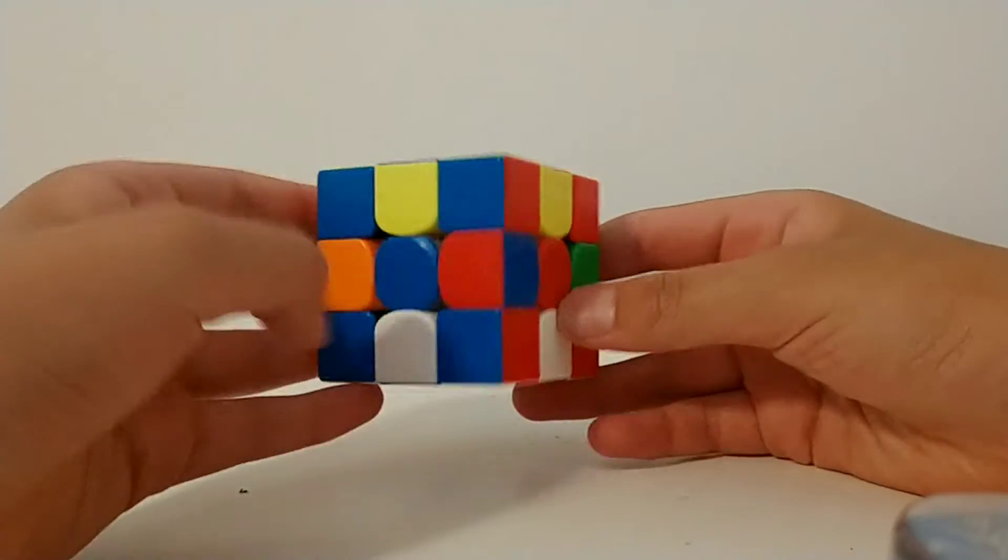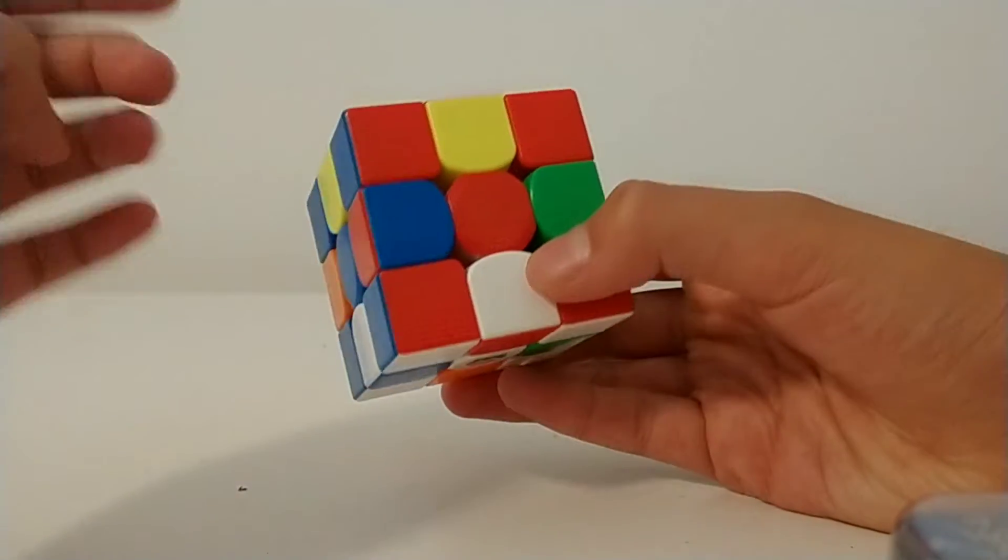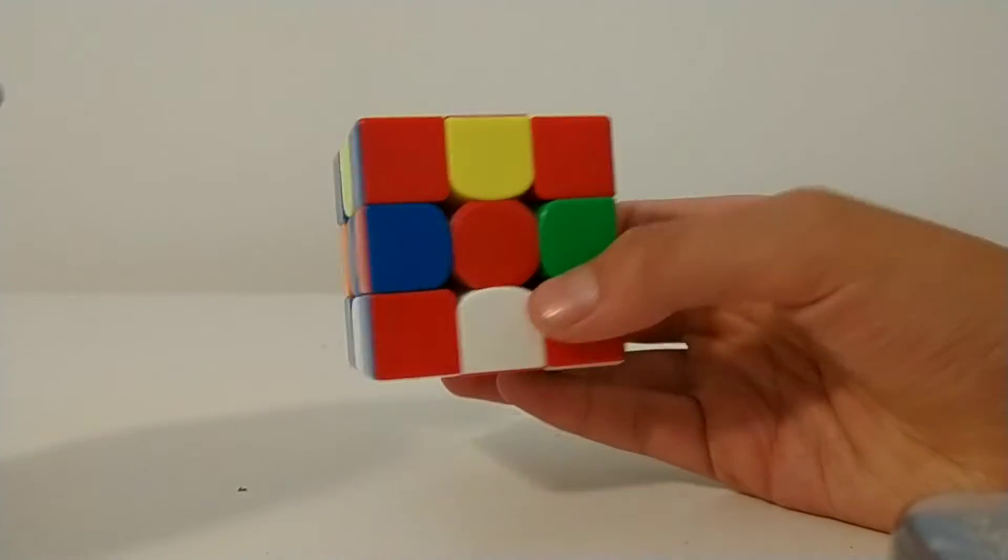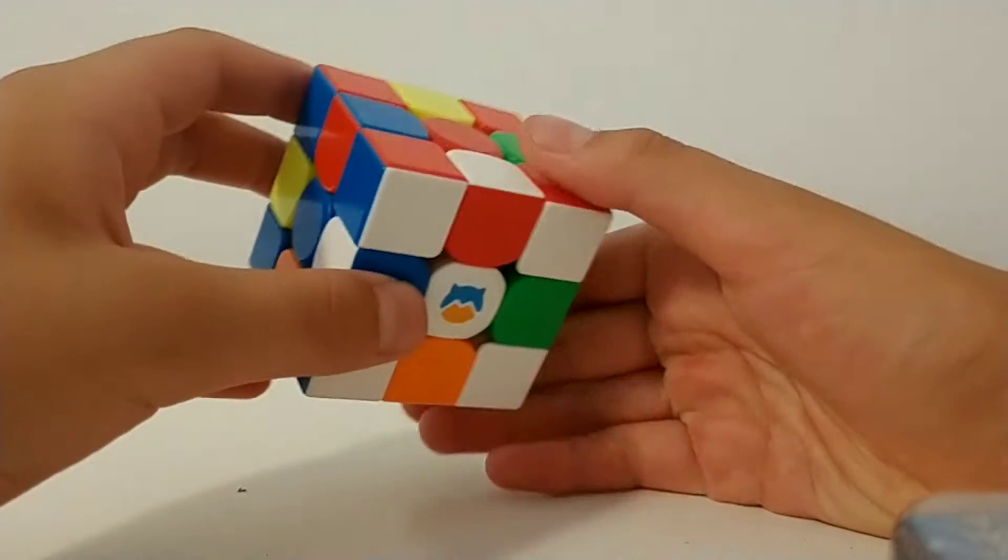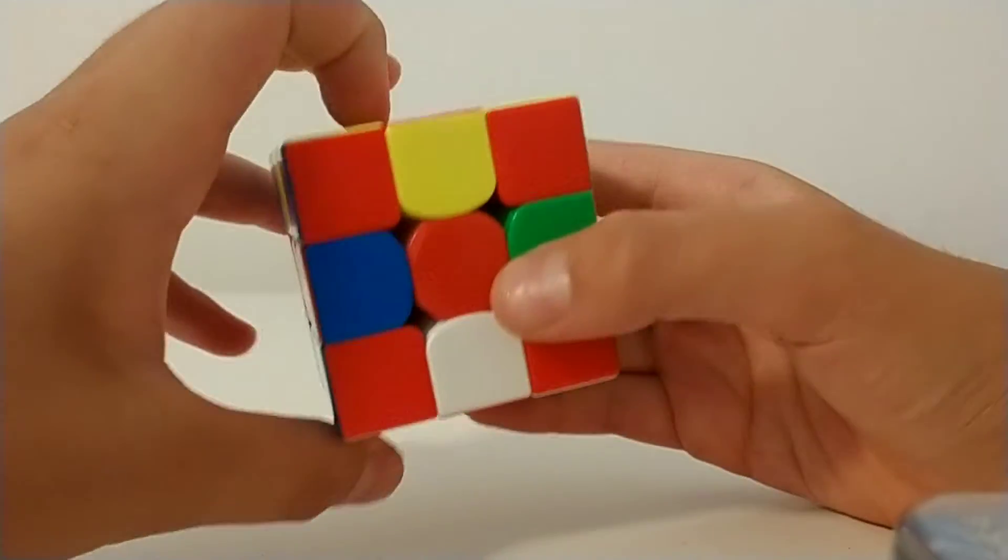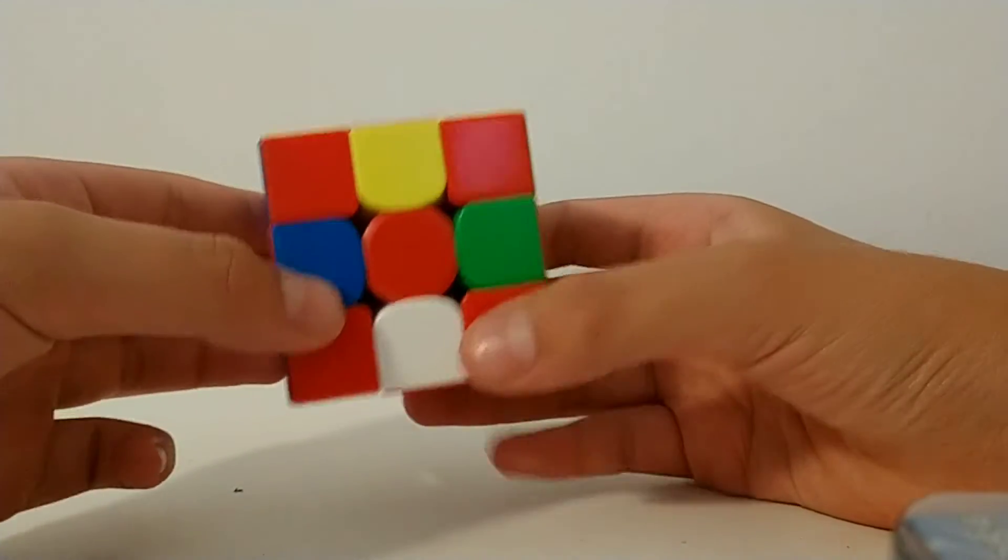This is the super flip pattern on the 3x3 Rubik's Cube, and this video will be telling you guys how to do it. The super flip pattern is pretty much a solved cube, but see all these edges are flipped.